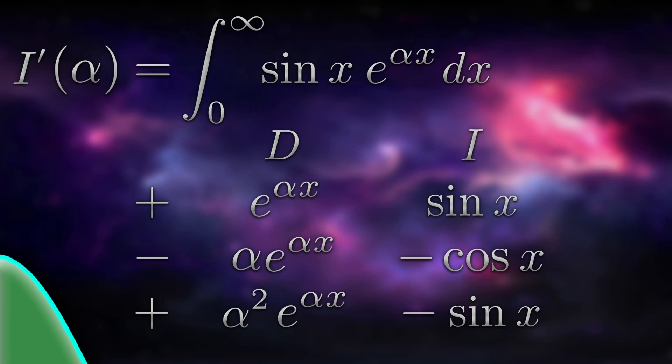The next step in integration by parts is to multiply along the diagonals. e to the alpha x times negative cos x is negative cos x e to the alpha x. For the upper bound of the integral, what happens as x goes to infinity? Remember that alpha is negative, so when x goes to infinity, this goes to zero. For the lower bound of the integral, what does this become at x equals zero? It'll be negative one. So this term will be zero minus minus one, which is one.